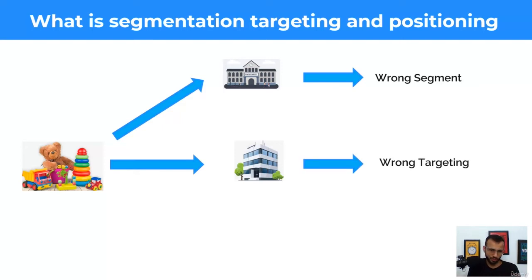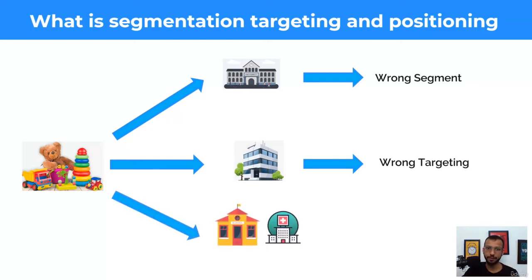After rethinking your strategy, you identified the core segment for toys — which is children. You also found that you need to target both the parents and the children, so you went to a hospital and in front of a school. Now you have the consumer and the customer at the same place. The consumer is the kid who plays with the toys, and the customer is the parent, and you have to make sure both are aligned.